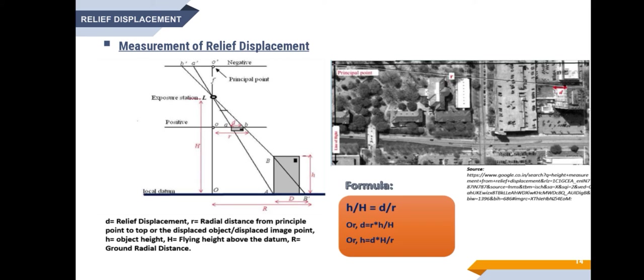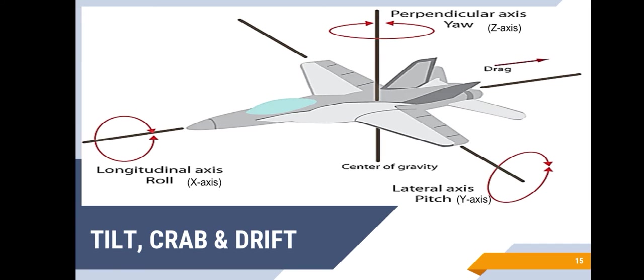This is what relief displacement is all about. Next topic is tilt, crab and drift. In any ideal case, an aircraft flies along straight and parallel lines in accordance with the flight plan. While in real circumstances, the aircraft direction and positions, and hence the camera within, can be disturbed by external factors such as crosswinds or other aircraft navigation problems, causing anomalies in the overlapping of aerial photo pairs. These anomalies are named tilt, crab and drift.